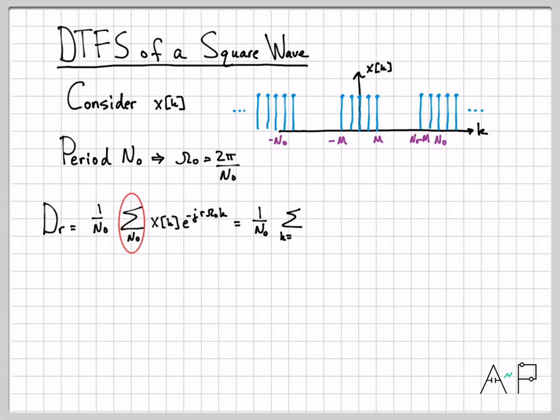In the DTFS equation, I get to choose where my sum goes from. The only restriction is it has to be n-naught consecutive values, but where those values start doesn't matter. For example, I could start my sum at time 0 and sum all the way up, that would be one full period. Or I could start right here and then sum up to this value for n-naught total terms. For this particular case, I actually think it's easiest to start right here at time minus m and go up to one short of that edge. That will be a total of n-naught terms. I'm going to go from minus m up to this point minus 1, one short of that edge for n-naught terms.